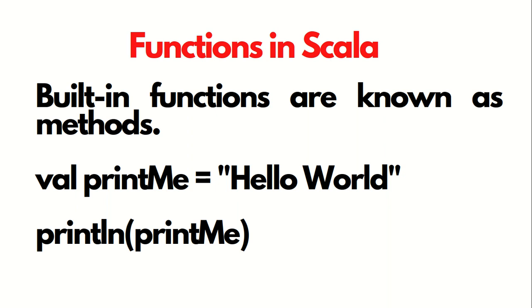In this code, println is a method which performs the specific task of printing. printMe is the argument we pass to the method, and Hello World is the resultant output. This means we are using functions even without realizing it. We keep on using these functions and this println statement - indirectly we are using functions.